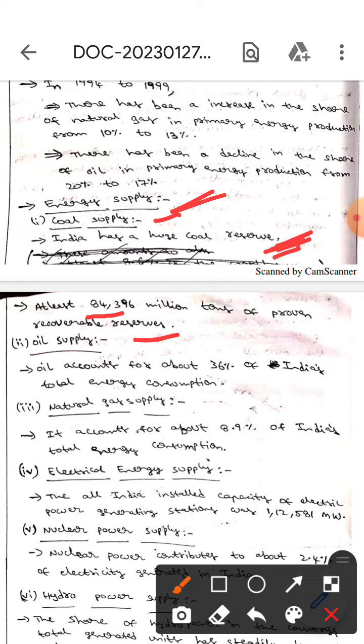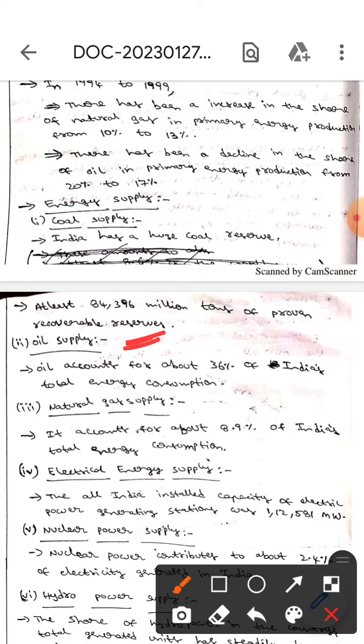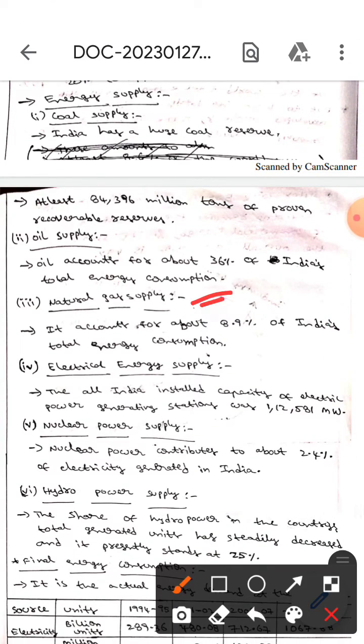The next one is oil supply. Here oil accounts for about 36 percentage of India's total energy consumption, whereas the next one is natural gas supply. It accounts for only about 8.9 percent of India's total energy consumption.